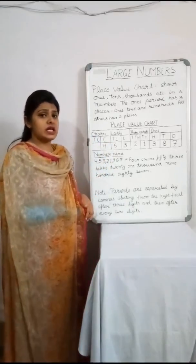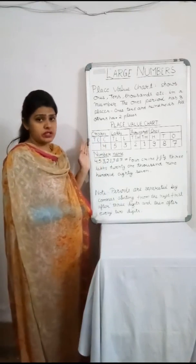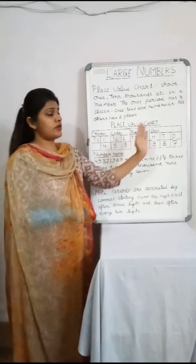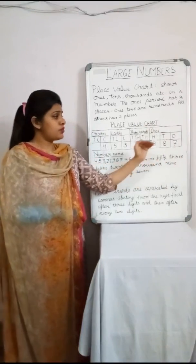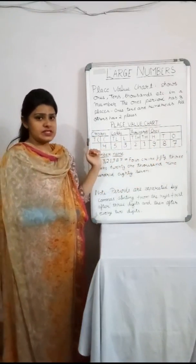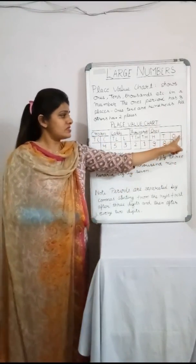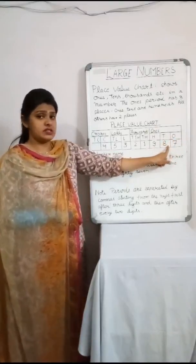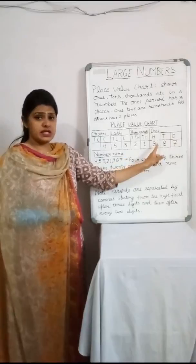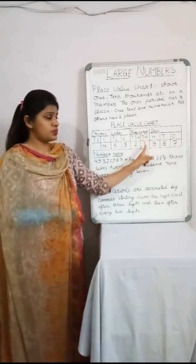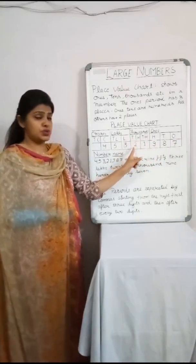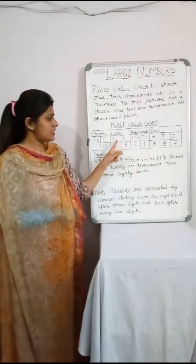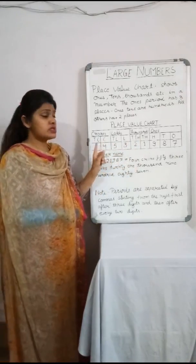Now, how to write a number in the place value chart? We will write the number starting from the right-hand side and then proceeding towards the left-hand side. Ones — seven; tens — eight; hundreds — nine; thousands — one; ten thousands — two; lakhs — three; ten lakhs — five; crores — four.